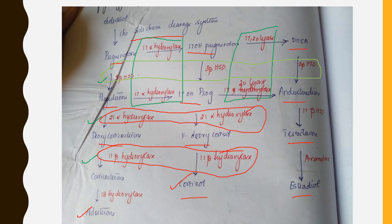Aldosterone functions include sodium and water retention and potassium excretion. Cortisol is important for stress response, glucose maintenance, and growth. Testosterone and DHEA are important for virilization, or more precisely, male external genitalia development. Estradiol is important for female development and bone growth in both sexes. Deoxycorticosterone has some aldosterone activity, and 11-deoxycortisol and corticosterone have some cortisol-like activity.